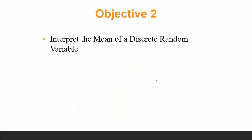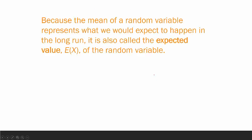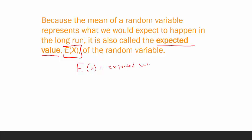Because the mean of a random variable represents what you expect to happen in the long run, it's also referred to as the expected value, denoted E(X) — the expected value of the random variable X. The expected value is literally just another way of saying the mean μ sub x. It's still the same formula: the sum of the x values times their corresponding probability.